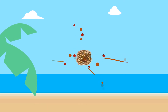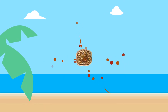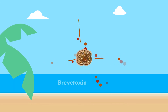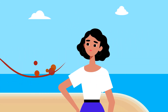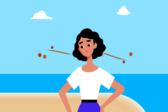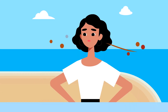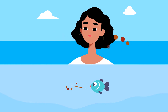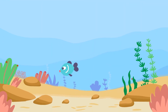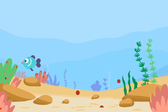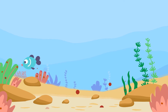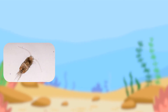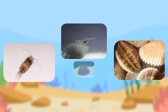Red tide blooms caused by K. brevis are considered harmful because this organism produces something called brevitoxin, which can impact the nervous system. These brevitoxins can enter the bodies of wildlife and humans through inhalation and ingestion. Brevitoxins can accumulate in the sediment and seagrasses of marine environments, and these toxins can accumulate in affected aquatic organisms like zooplankton, shellfish, and other filter feeders.